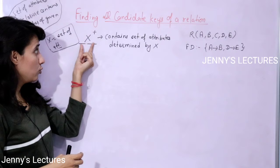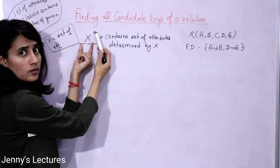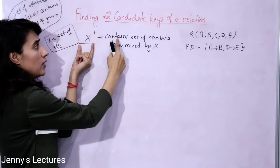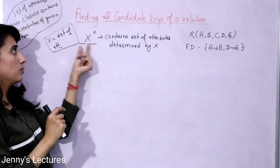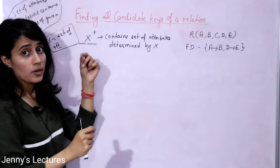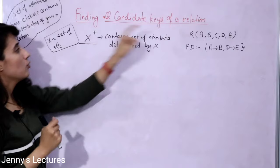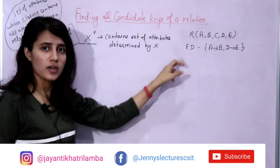Attribute closure is denoted as X+. It contains the set of attributes determined by X, where X may be one attribute, two attributes, or three attributes — it is a set of attributes. A super key, in the context of closure, is a set of attributes whose closure contains all attributes of a given relation.